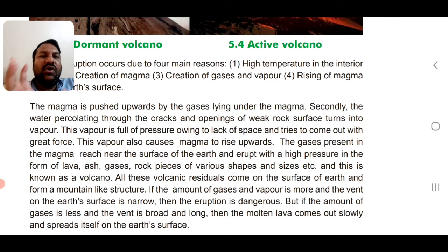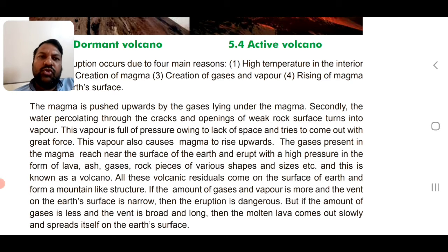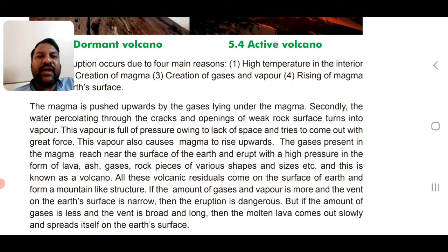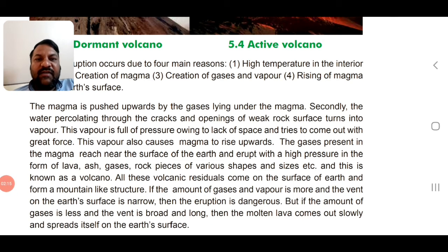The vapour, full of pressure, also causes magma to rise upwards. The gases present in the magma reach near the surface of the Earth and erupt with high pressure, blasting from above the point. This eruption occurs in the form of lava, ash, gases, and rock pieces of various shapes and sizes.